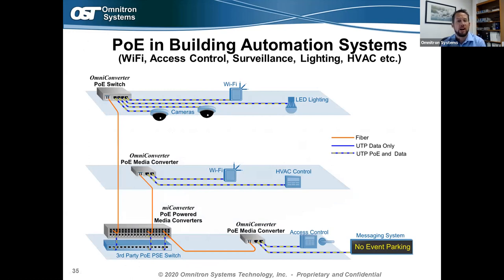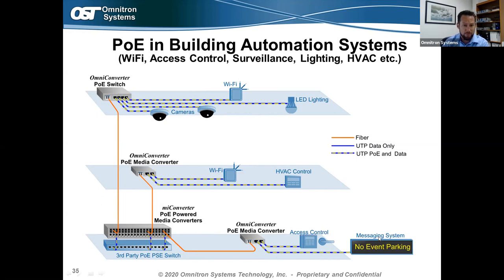In a smart building or building automation application, a central office at the ground floor sends fiber to various PoE-powered devices throughout the building. A myConverter chassis runs fiber to Omni Converter PoE media converters for dropping off PoE to two devices — such as access control at the building edge and a messaging system in the parking lot. Running fiber up through the building, you can drop off to Wi-Fi, HVAC controls, or use an Omni Converter PoE switch with more ports for Wi-Fi access points, LED lighting, or cameras.